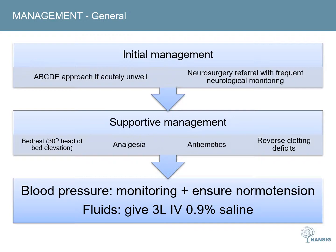The initial management of patients with a subarachnoid haemorrhage follows the ABCD approach. Patients with a reduced conscious level may need to be intubated to protect their airway. Initial management includes bed rest, analgesia, anti-emetics, and correction of INR if appropriate. Surges or falls in blood pressure should be avoided.